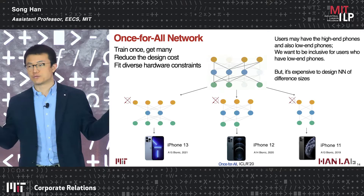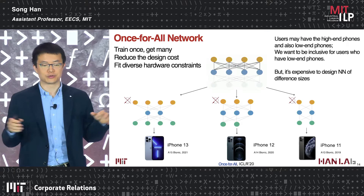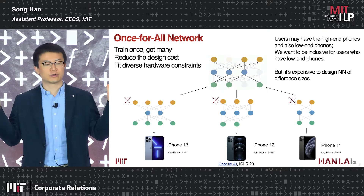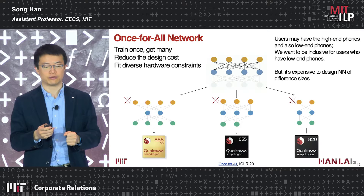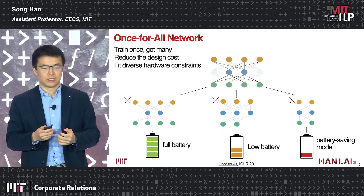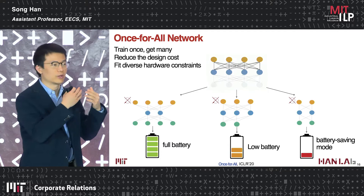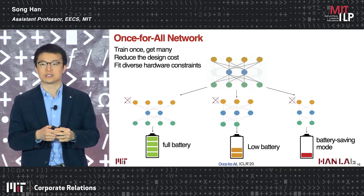The benefit of the once-for-all network is inclusivity — users may have high-end iPhones or low-end phones. It's very expensive to design neural networks of different sizes. By training only once, we get many different subnetworks for free to fit diverse hardware constraints, like different generations of mobile phones and chips from the Snapdragon 888 to the older Snapdragon 820, and different scenarios like full battery versus battery-saving mode.